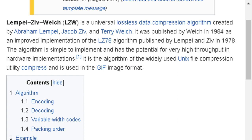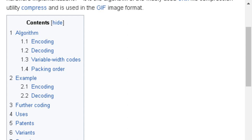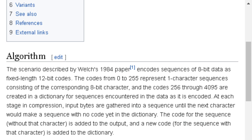Contents: 1. Algorithm 1.1 Encoding 1.2 Decoding 1.3 Variable width codes 1.4 Packing order 2. Example 2.1 Encoding 2.2 Decoding 3. Further coding 4. Uses 5. Patents 6. Variants 7. See also 8. References 9. External links.